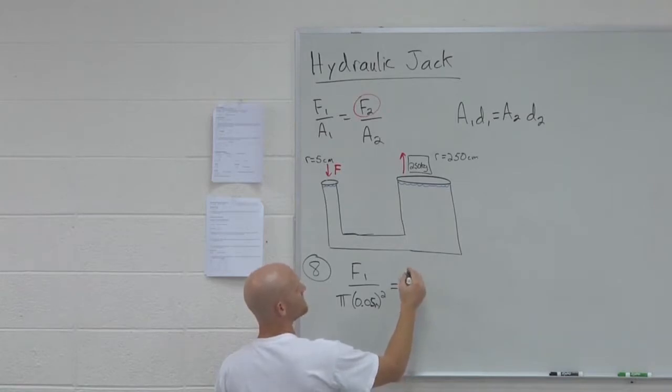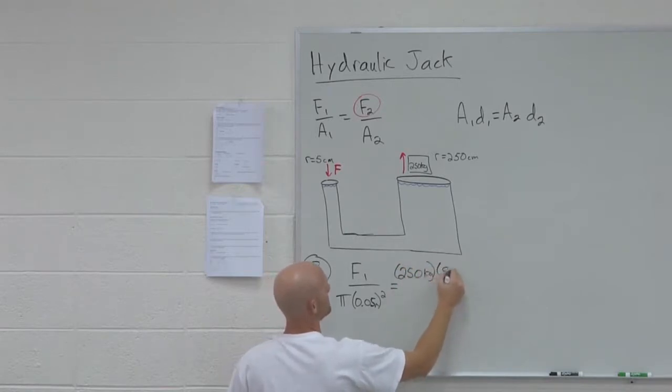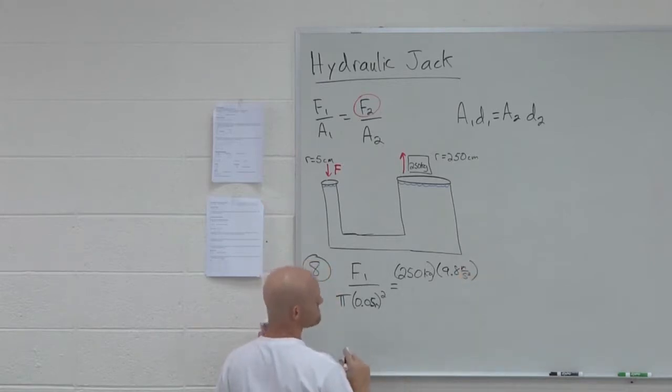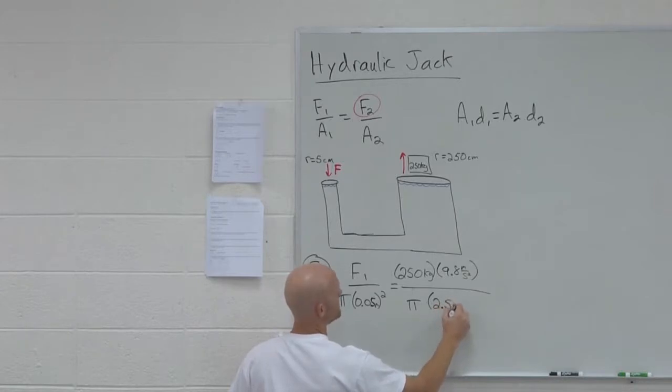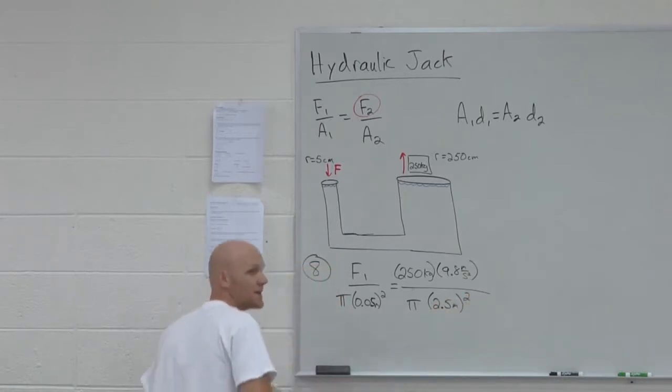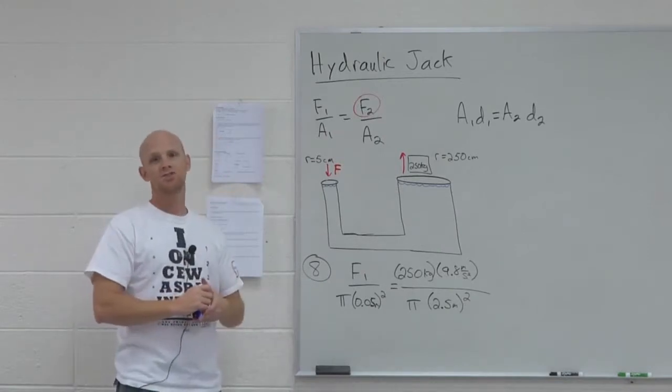And what's F2 here again? 250 kilograms times gravity. So we've got to lift to counteract its weight. And then what's the area on this side? 2.5 meters. And from here on out, it's plugging and chugging.